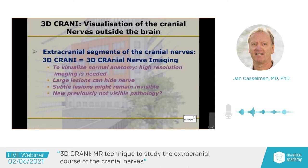But of course, this was not the initial goal. The initial goal was: can we see the branches of the trigeminal outside of the skull? Can we see the 9th, 10th, 11th, 12th? Can we see these nerves outside of the skull? And therefore, we need a high resolution. Large lesions can hide the nerve — once you get a big lesion, you won't see the course of the nerves that well anymore. And subtle lesions might remain invisible.